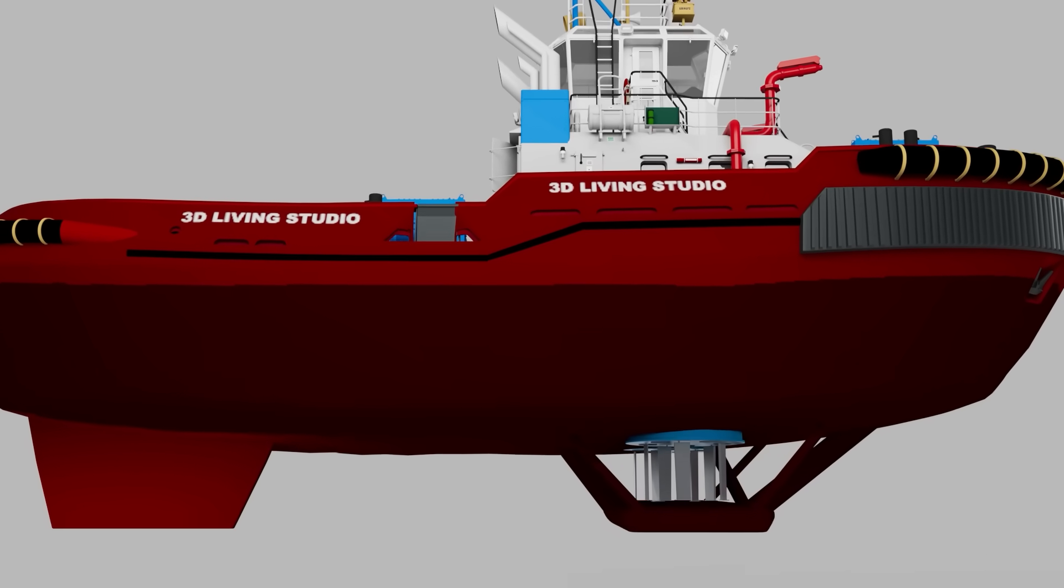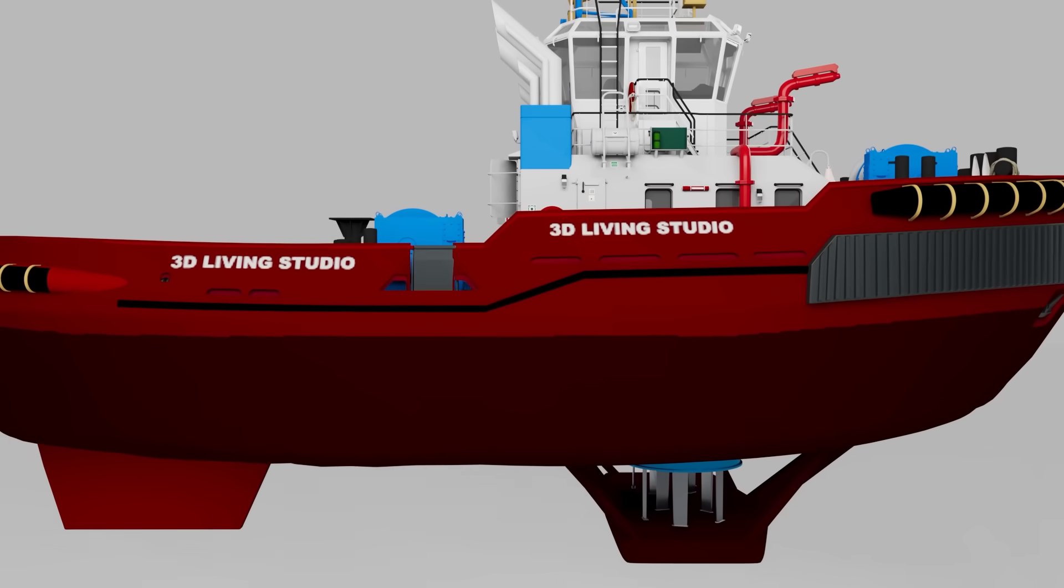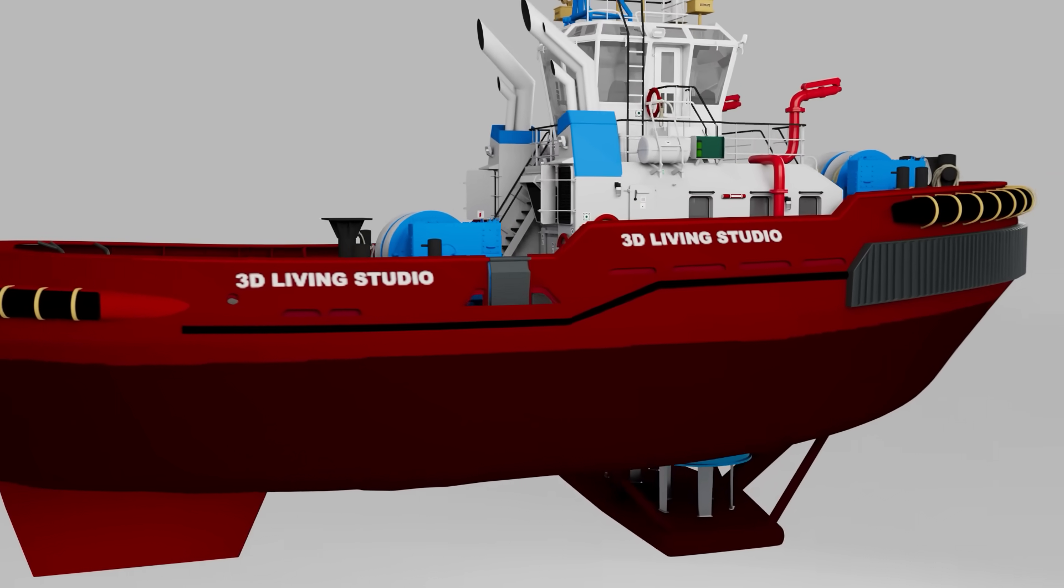A tugboat's hull is shaped like a deep bowl, keeping much of it submerged for excellent stability.